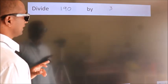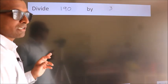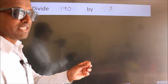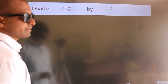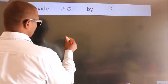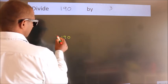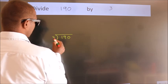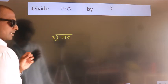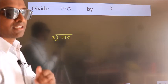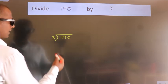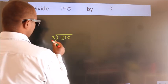Divide 190 by 3. To do this division, we should frame it in this way. 190 here, 3 here. This is your step 1. Next, here we have 1, here 3.